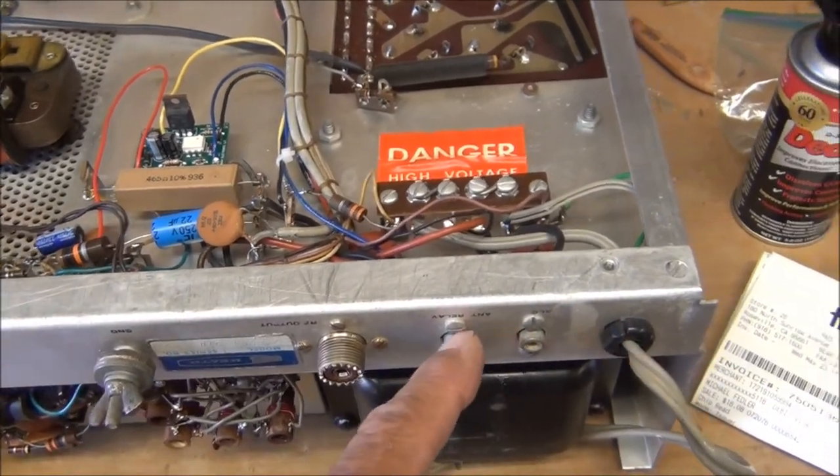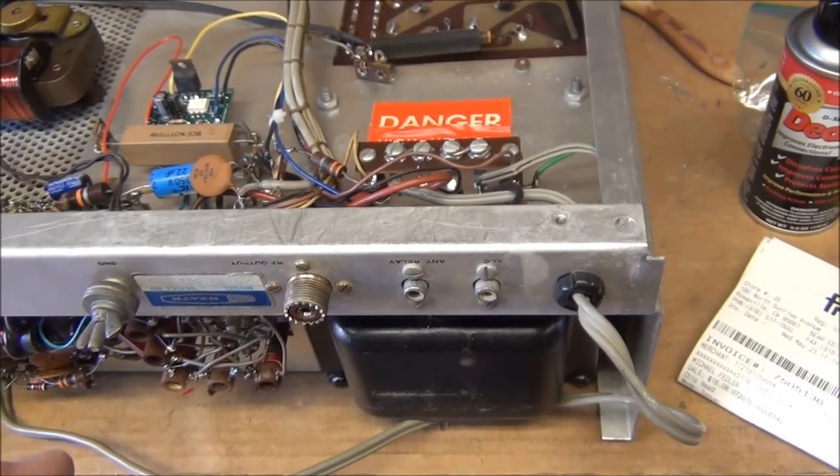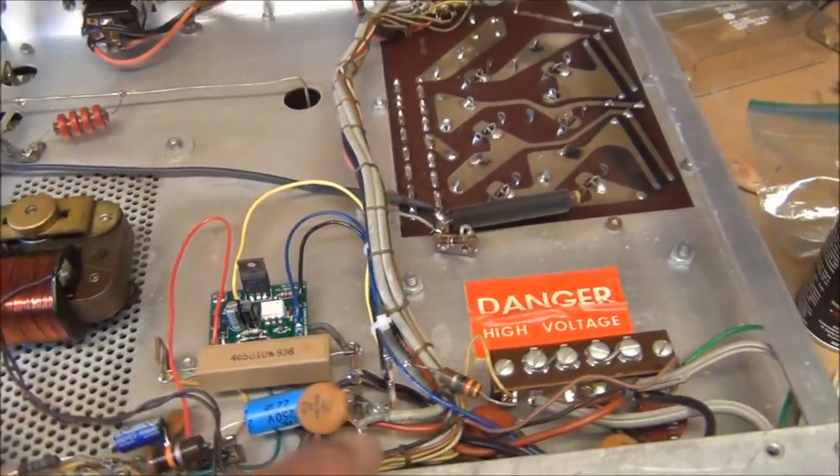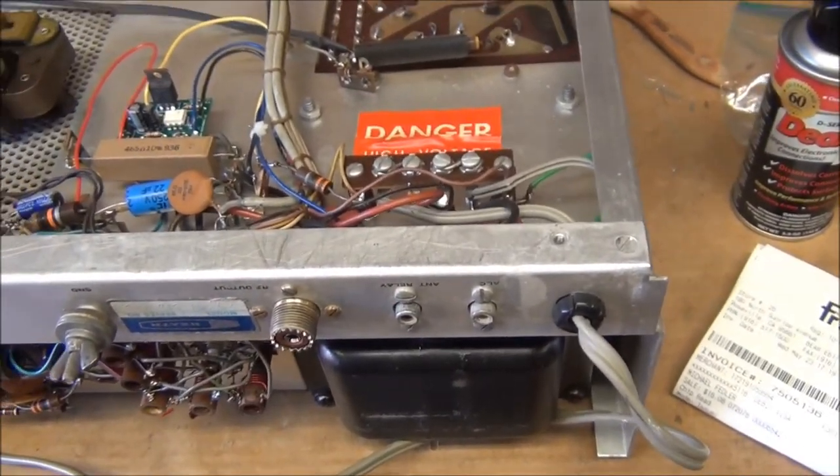It was made for older transceivers that had a lot more robust keying circuit to key this amplifier. You can't connect this directly to a modern transceiver. You have to have an intermediate box that has a relay in it. This circuit eliminates that, so now you can connect it to any modern transceiver and it'll key it easily.